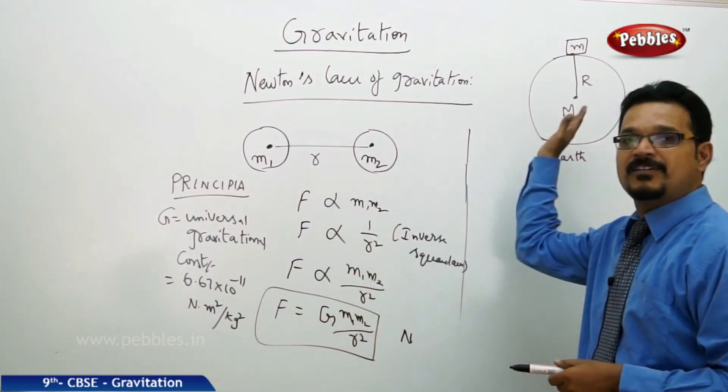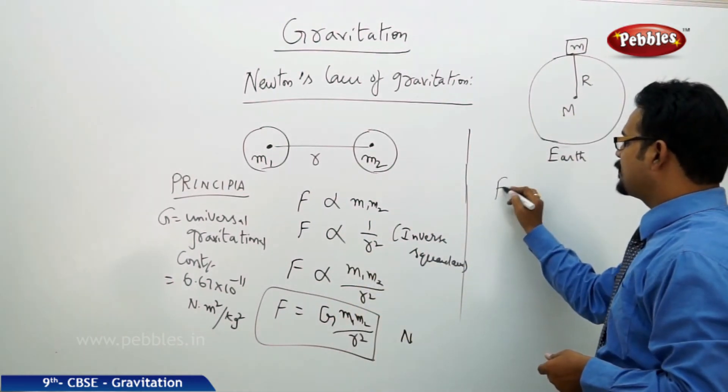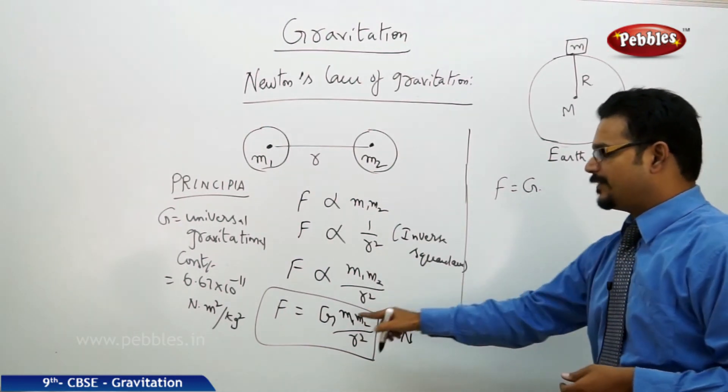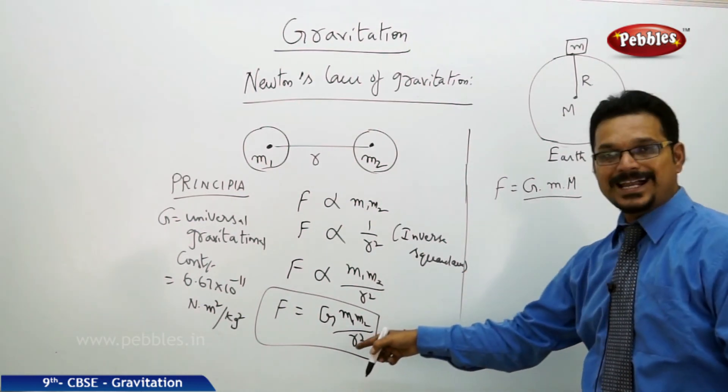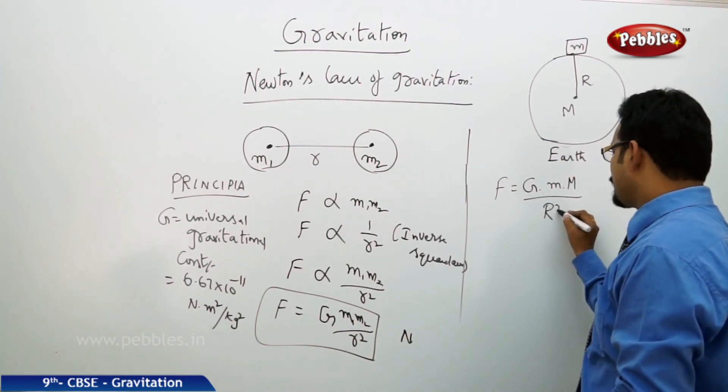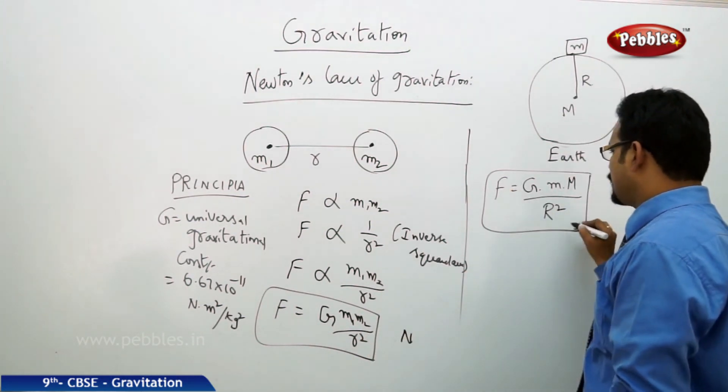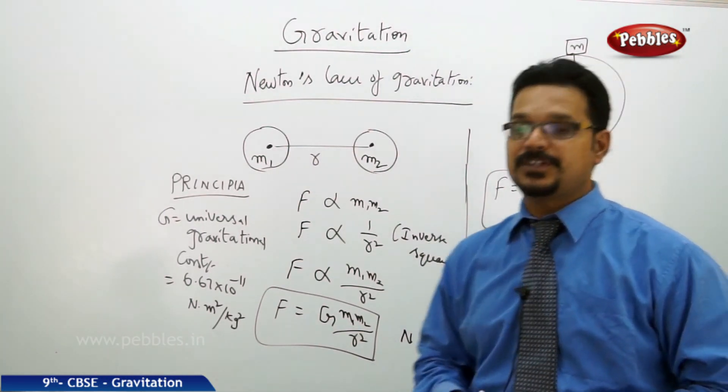Same formula transforms there. So F equals G m1 m2 - first mass is small m, second mass is capital M, by r square, which is nothing but radius R square. So this is the formula for force of gravitation on the body on the surface of the Earth.